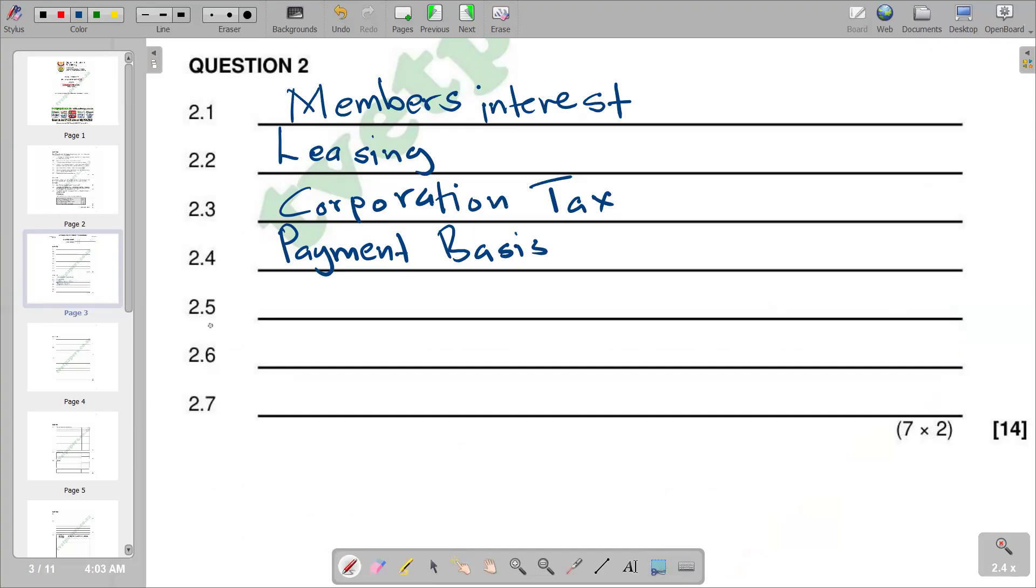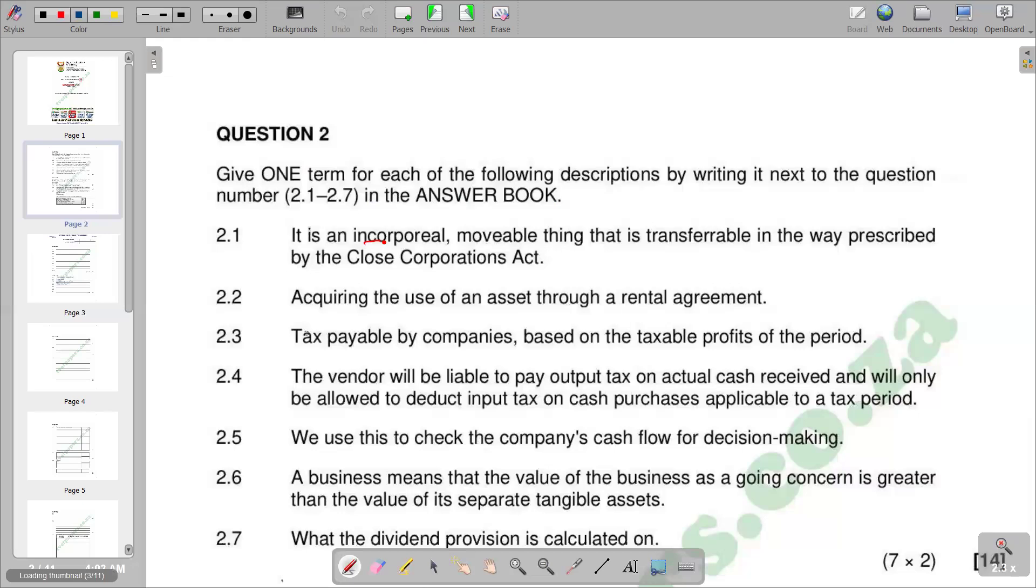Moving on to 2.5: We use this to check the company's cash inflow for decision making. The moment that it becomes for decision making, we know that this is net cash inflow divided by its total debt. This is basically cash flow to debt ratio. It is the ratio of a company's cash flow from operations to its total debt. The net cash flow divided by its total debt is 2.5.